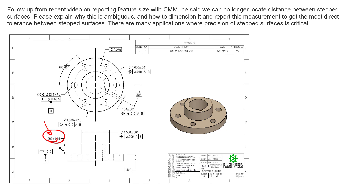We can clearly see the attempt that this bottom surface is being located to this top surface — 0.565 plus or minus 15 thousandths — or maybe it's the top surface being located to the bottom surface. Which one of these surfaces is our origin? It's important to point out that size dimensions do not and will not ever utilize datum features. Whether we identified the top surface as datum feature A, the bottom surface as datum feature A, or neither — they will never use datum features to locate or be the origin of that size dimension.